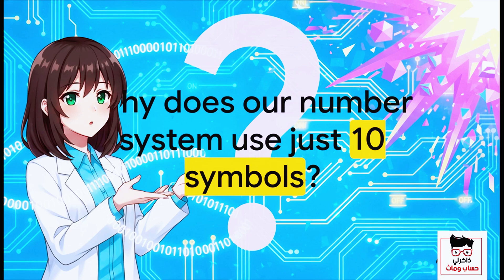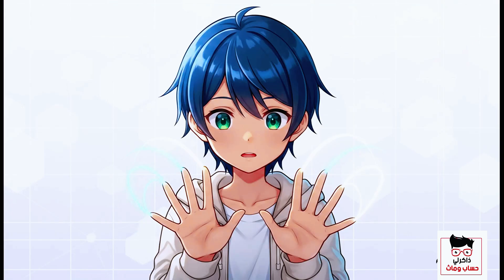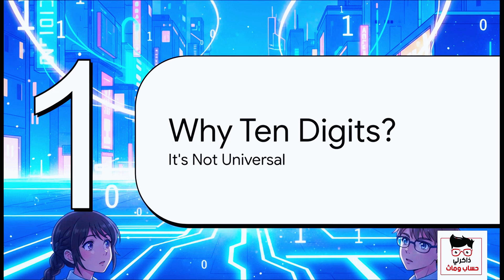Putting a one and a zero together to get 10. Well, the most popular idea is also the most obvious one — it comes down to the original counting tools we were all born with. We have 10 fingers. It was just the most natural, simple, and intuitive way to keep track of things. But just because this base 10 system is what we're all used to, that doesn't mean it's the only way to do things. Not by a long shot.